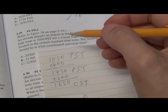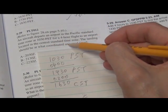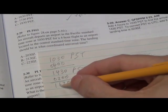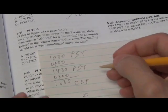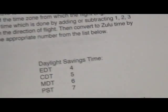But that's not what the question asks for. The answer they're looking for is in Zulu time. How do you convert one, six, three, zero Central Standard Time to Zulu? Very easy. You go back to the chart.